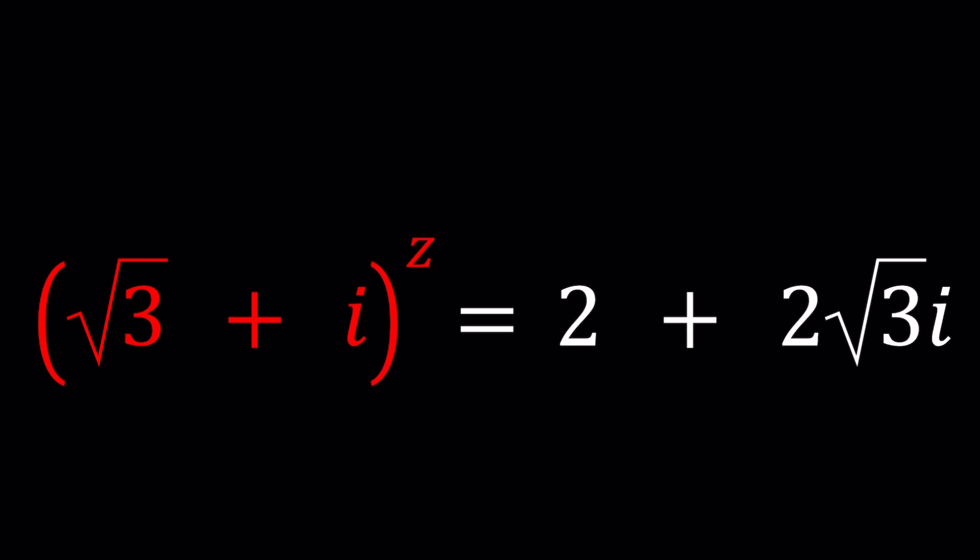This channel is all about complex numbers and in this video we're going to be solving a very complex exponential equation. We have square root of 3 plus i to the power z. Z is a complex number and that equals 2 plus 2 times the square root of 3 times i. So we're going to solve for z values.